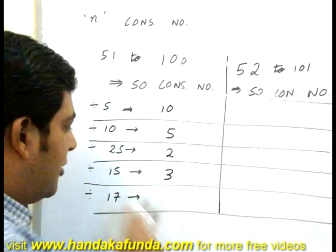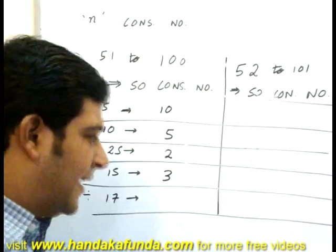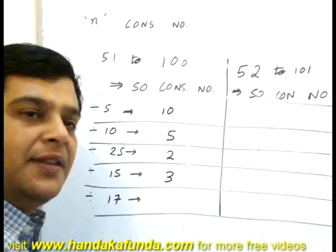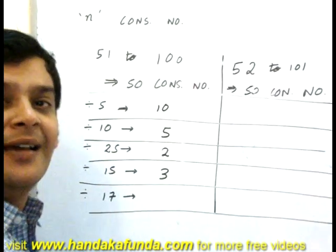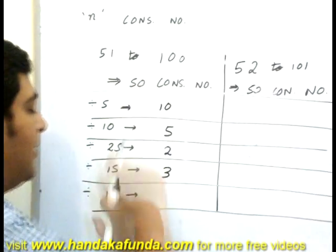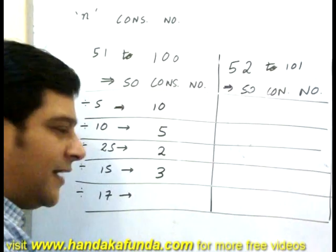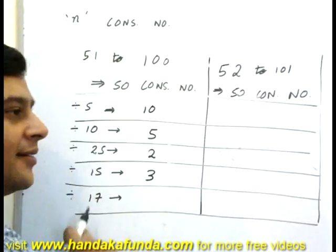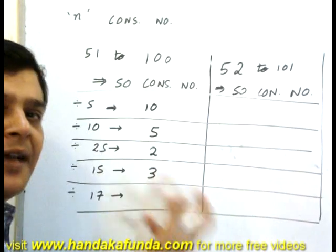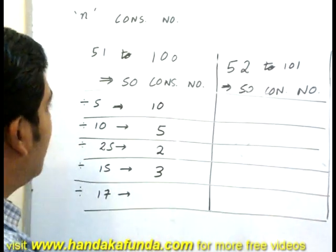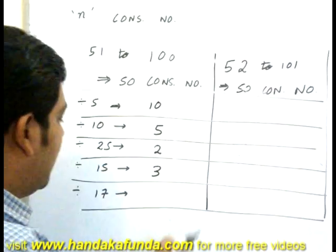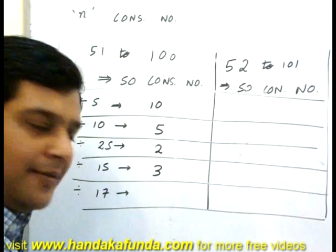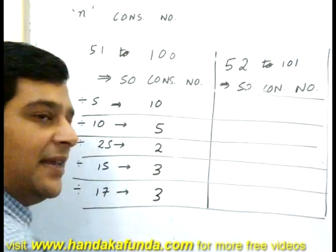So there are three numbers which are divisible by 15. How many of them are divisible by 17? Once again, I do not know because 17 is not a factor of 50. So I will have to check. 51 is divisible by 17, the next one will be 68, the next will be 85 and that is it. So this will also be 3.